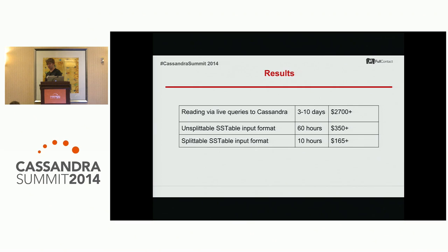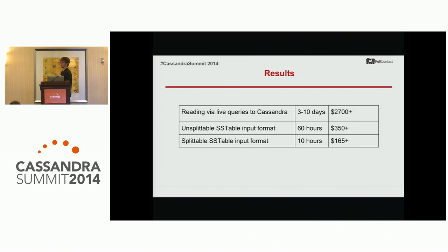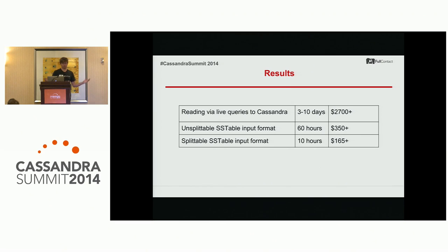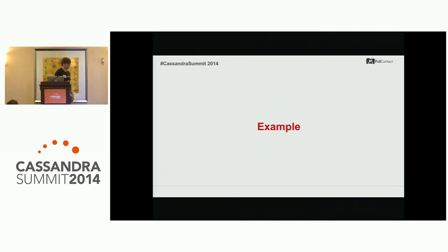Some results: we started at three to ten days and $2,700. Using existing solutions we got that better, and with our final solution much better. With the splittable format, we can add machines and go faster — we're doing 48 machines now and go through this in ten hours. We could double that and probably go faster, but ten hours is good enough for us at this point. We haven't invested a lot more tuning time because we've decreased it so much that we're focusing on other things and leveraging the benefits we've gained.